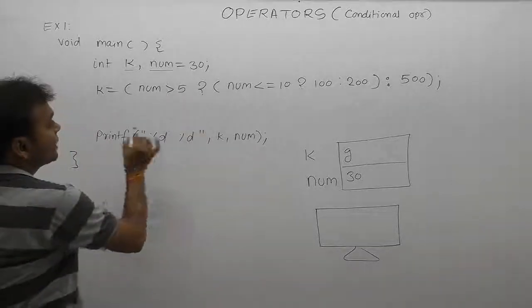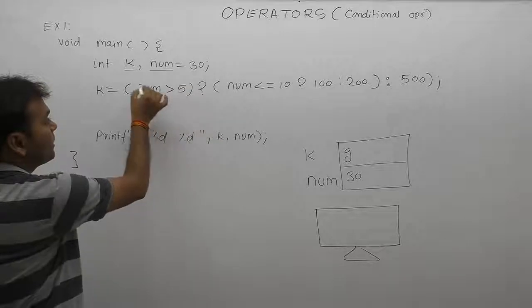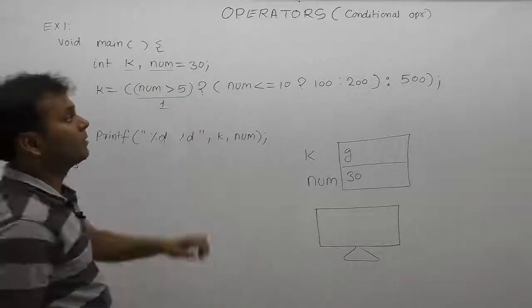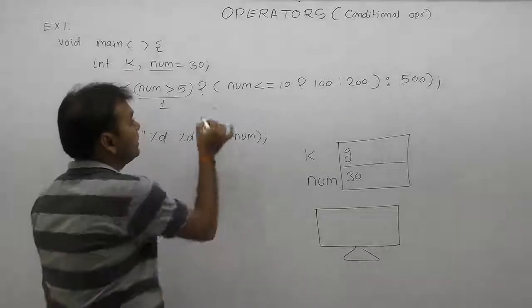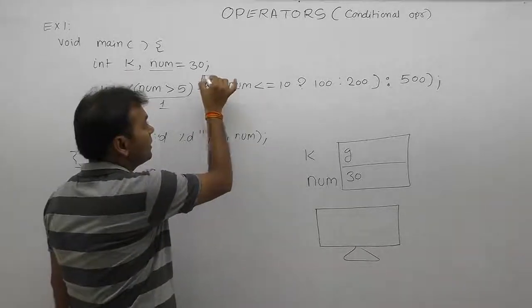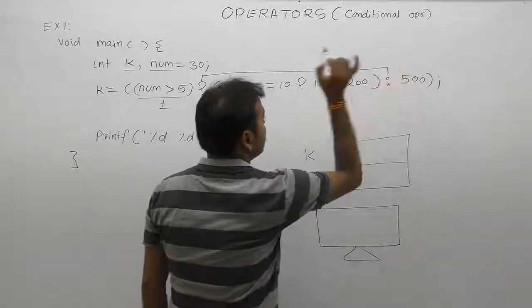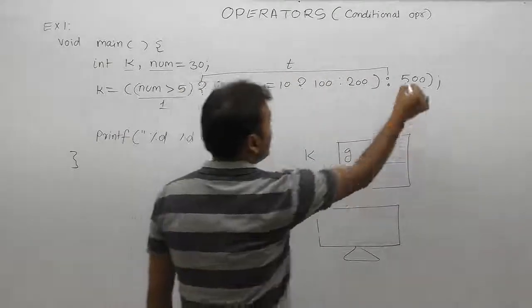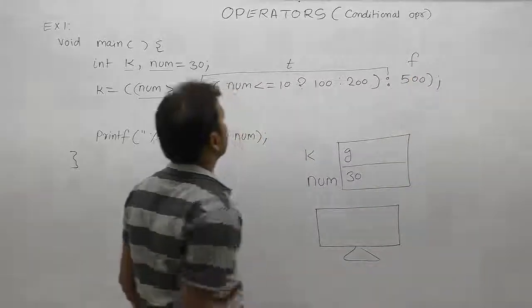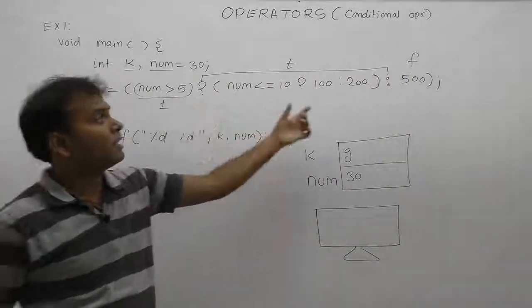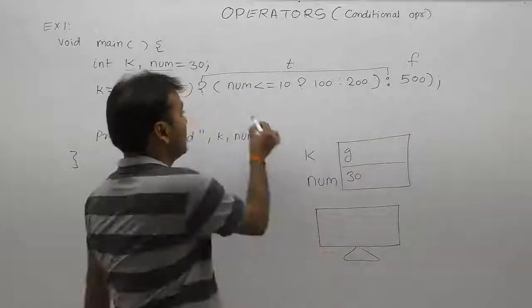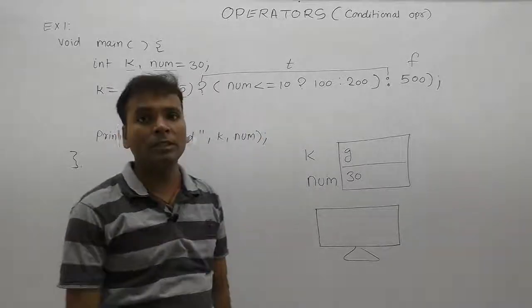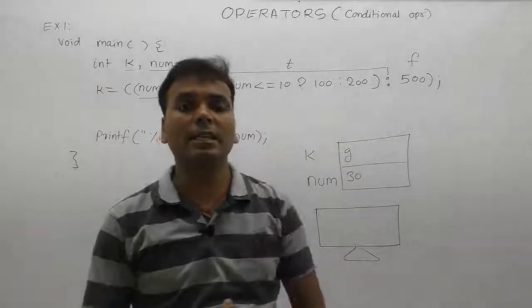For the condition, this is the first to operate for that conditional operator. Whatever comes between question mark and colon, this whole process is considered as true expression. This one is false expression. This is a case of a conditional operator in nested form. This is the case of nested conditional operators.